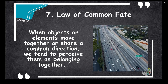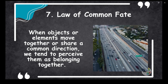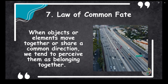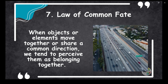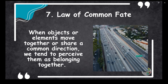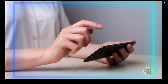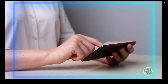Number seven: the law of common fate. When objects or elements move together or share a common direction, we tend to perceive them as belonging together. A literal example is a set of cars moving in one direction versus cars coming from the opposite direction — our brains categorize them as two different groups.